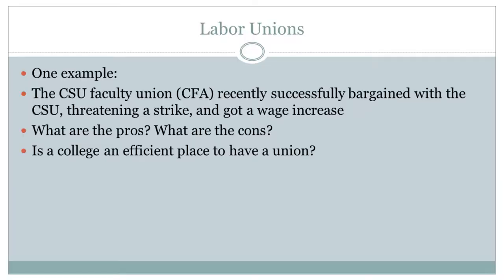For example, the CSU faculty union — the CFA — not too long ago had a strike to try to get a wage increase, and in fact they did get a wage increase. The pros: higher wages for those employed. The cons: the CSU is probably not hiring as many people as they would if wages were lower and the union wasn't there. That's a trade-off you have to think about — how do we value the wages of people who are employed against the employment probability of people who are not? There's always a trade-off with pretty much everything.